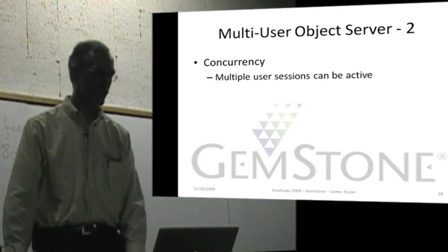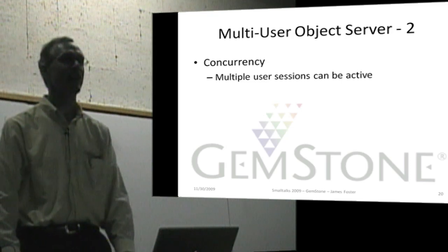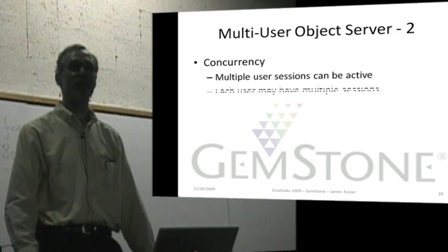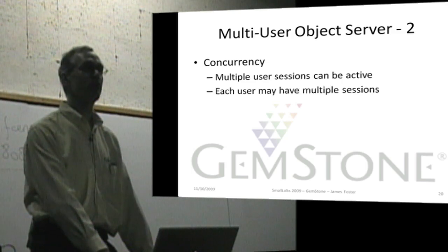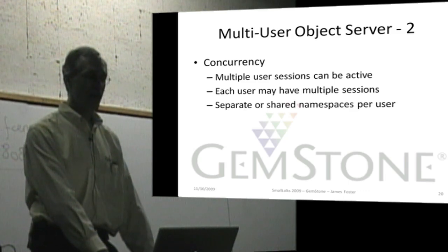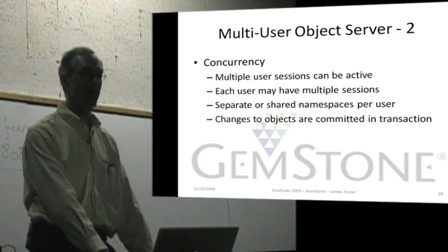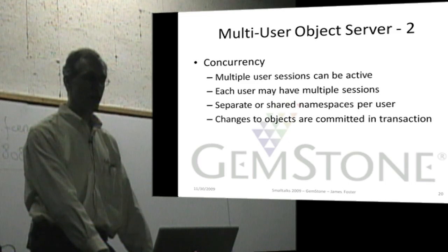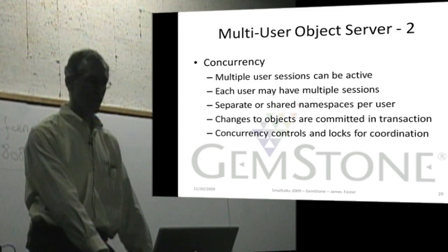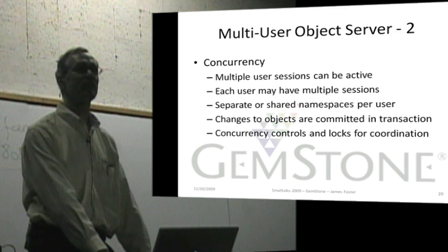Concurrency is a challenge and something that needs to be supported. Multiple user sessions can be active, and each user can have multiple sessions — connections to the database that are each independent. You can have separate or shared namespaces on a per-user basis. Changes to objects are committed in a transaction, with full transaction semantics: either all or none of it is visible. Concurrency controls include locking for coordination between multiple sessions.